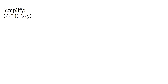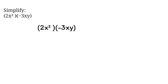Simplify 2x squared times negative 3xy. To be good at simplifying, you have to be good at multiplying also. Unlike addition and subtraction, you can multiply any two values — they do not have to be like terms. When multiplying, you will first perform a normal arithmetic multiplication on the numbers. In this case, we have 2 times negative 3, which is negative 6.